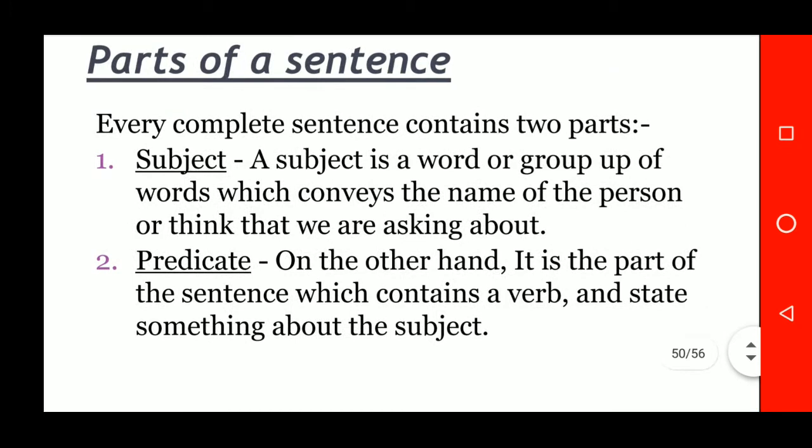Next are the parts of a sentence. Every complete sentence contains two parts. The first is the subject: a word or group of words which conveys the name of the person or thing that we are talking about. The second is the predicate: the part of the sentence which contains a verb and states something about the subject.